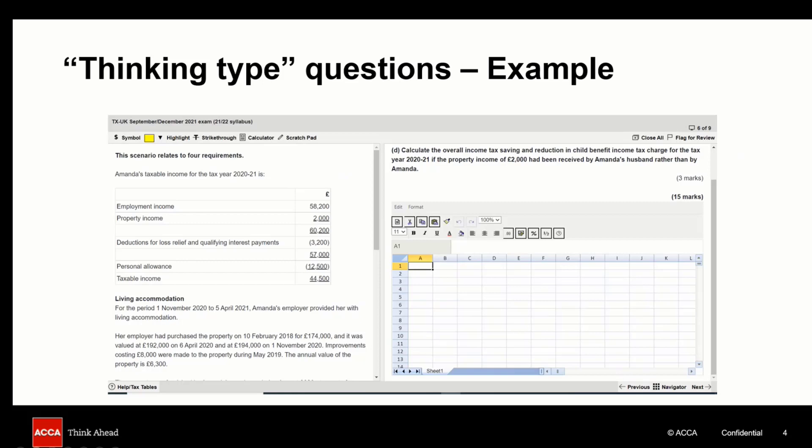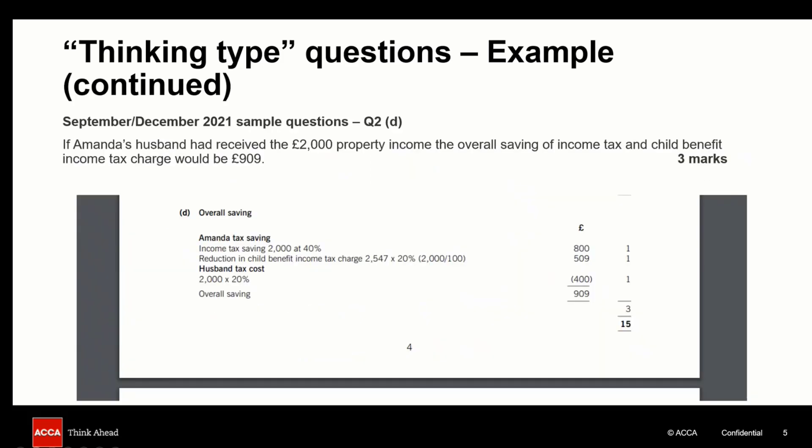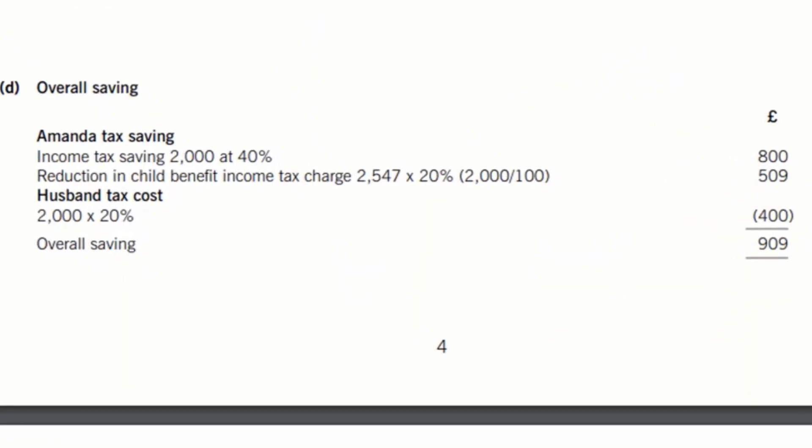As you can see from the solution all you were required to do was take the reduction in Amanda's property income of £2000 and apply her marginal rate of income tax of 40% as a higher rate taxpayer. Remember Amanda's personal allowance would not have been restricted given her taxable income which has already been calculated of £44,500.